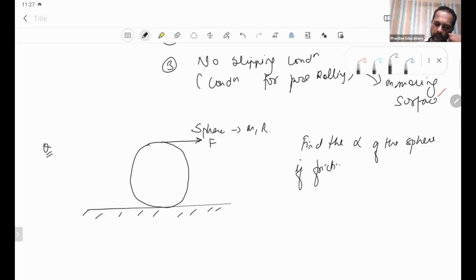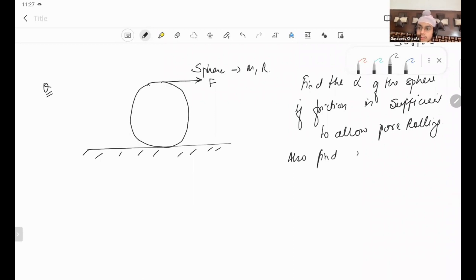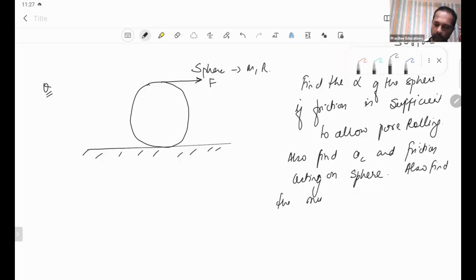If friction is sufficient to allow pure rolling, find Ac and friction acting on the sphere. Also find the minimum value of mu for which pure rolling can take place.